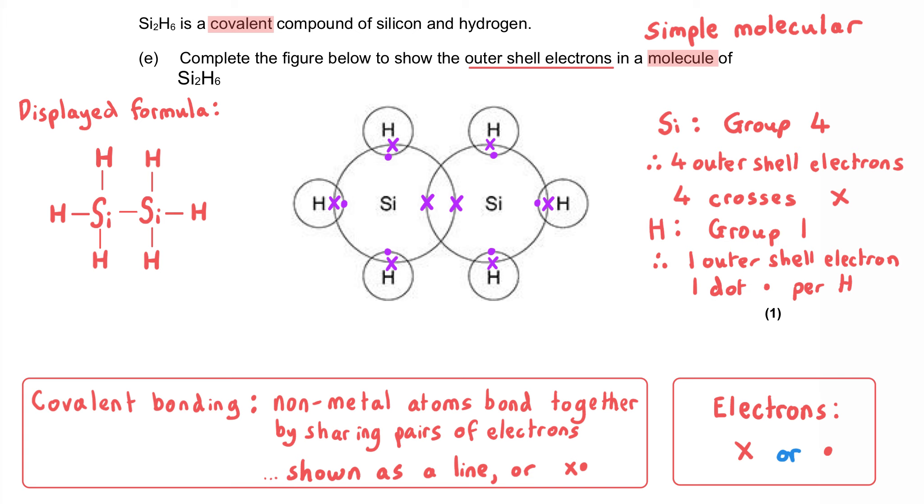We could use all crosses or all dots, but typically we'll use a dot to represent the electrons from one atom and a cross to represent the electrons from another type of atom.